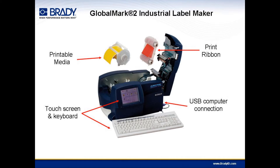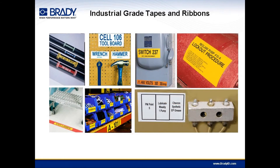They can quickly create what they need right at the printer. While the GlobalMark supports a variety of media, the primary output material is our industrial-grade vinyl. It uses an aggressive adhesive that sticks and stays stuck to a wide variety of surfaces, including pipes, floors, and walls. The image is printed using thermal transfer technology, which actually burns the ink into the tape, providing much better durability than either inkjet or laser.